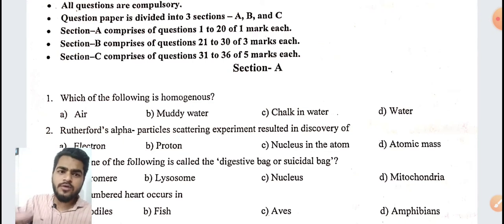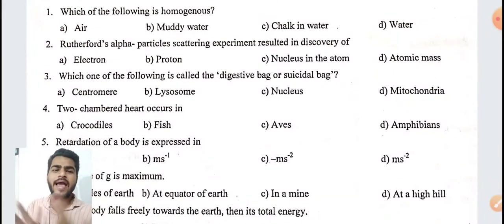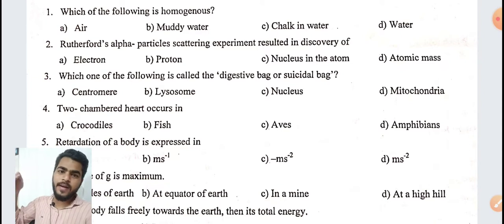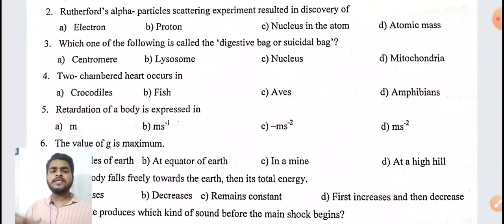I will just show you this sample paper and you take the screenshot of each and every page. After that, you try to solve it by yourself. Let's see the first answer. Which of the following is homogeneous? Air is a kind of a homogeneous mixture. Rutherford's alpha particle cancer experiment - he found the nucleus in the atom by that experiment of alpha particles. He emitted the alpha particles on the gold foil, so definitely he got the nucleus of the atom.